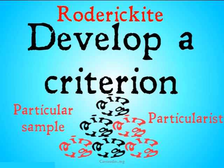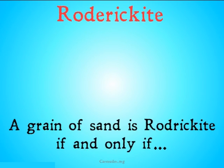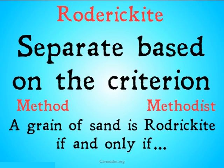Based on this particular sample, we could develop a criterion for determining which grains of sand are rogerkite and which ones are not. This would be a particularist solution. We would then apply the criterion to a larger set and so on. We could also be given a method or criterion — 'a grain of sand is rogerkite if and only if...' — and then based on this criterion, we could go ahead and separate the sand. This is a methodist solution.